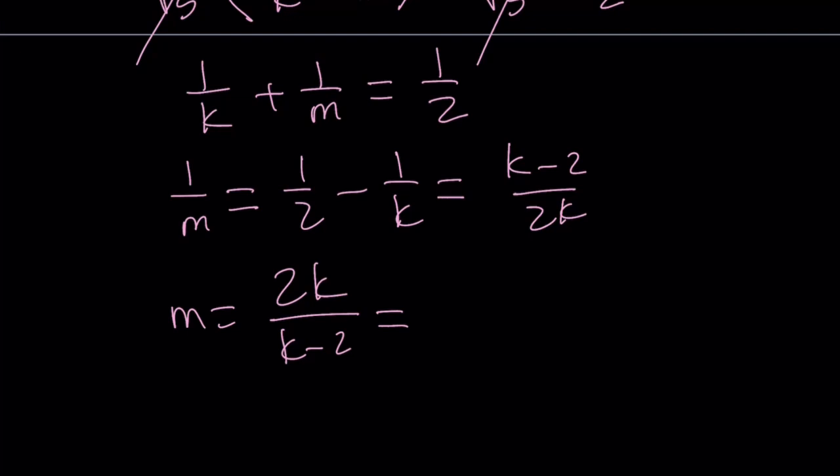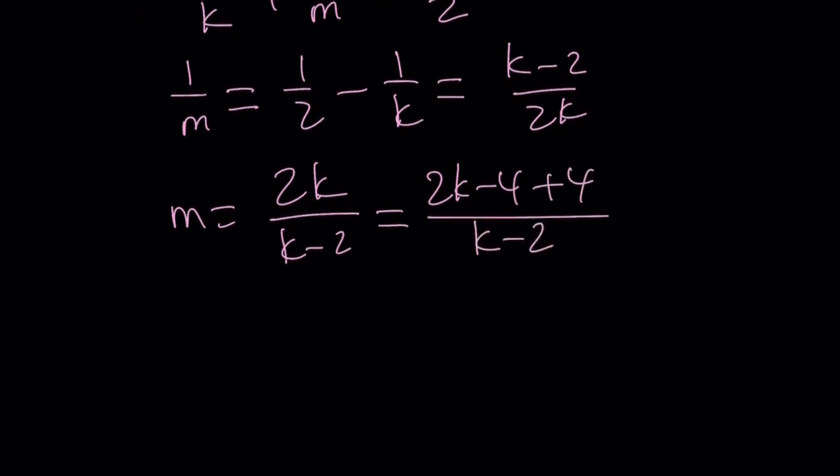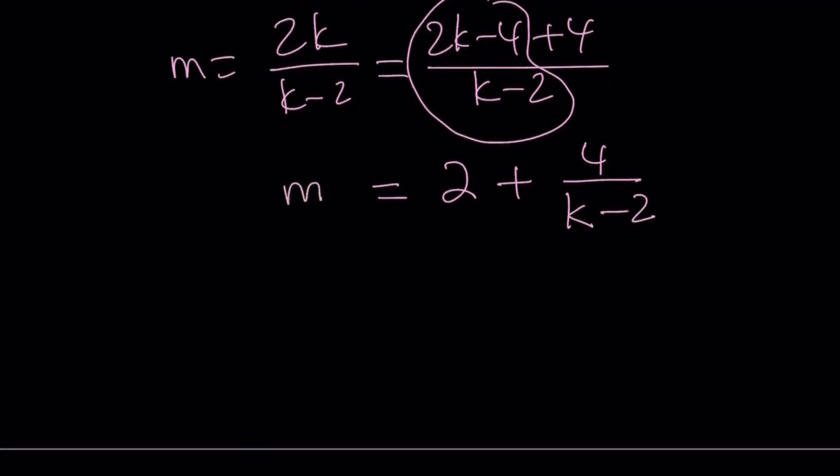I'm going to do a little bit of hocus pocus here, a little mathemagics. You can go ahead and subtract 4 and add 4 to make this expression divisible by k minus 2. It's a really neat trick that we use with number theory or algebra. That gives us 2 because that is 2 times k minus 2 and the rest, the remainder. This is also used with polynomial divisions.